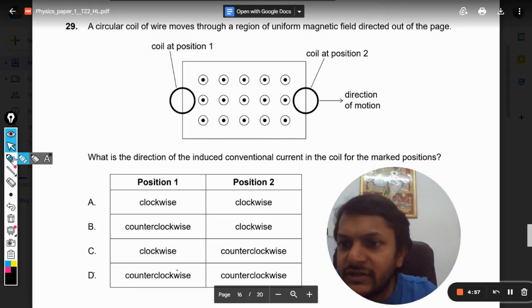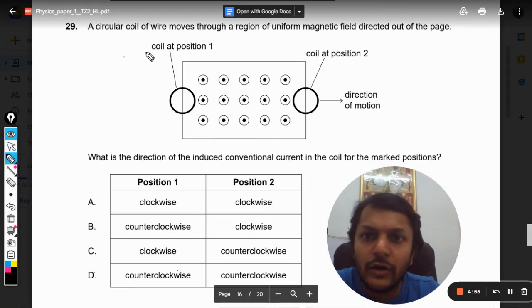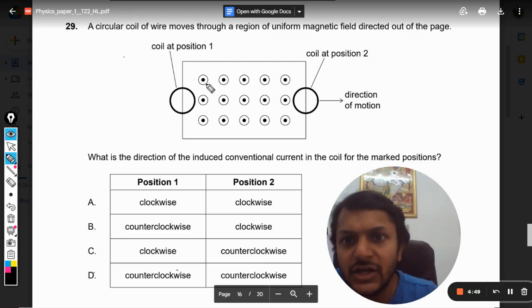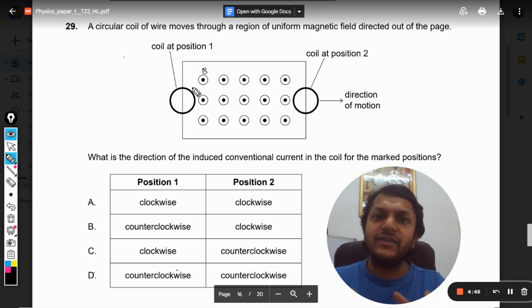Okay dear students, let's see what is in this question. A circular coil of wire moves through a region of uniform magnetic field directed out of the page. So the magnetic field is directed out of the page, meaning it is coming out of your laptop screen or cell phone screen going towards you.